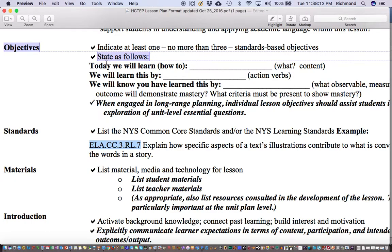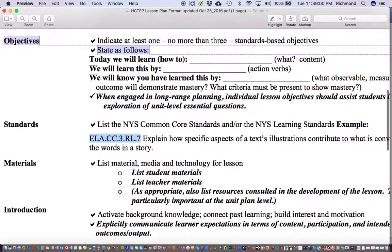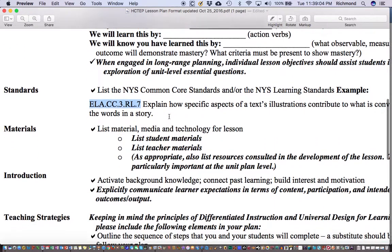Switching back over to the lesson plan, I notice that objectives say that we're going to include them in this form: Today we will learn how to do this or do that. What is the content that is going to be learned? We will learn this by, with action verbs like performing or creating or responding or connecting. You will know that you have learned this by, and typically in music class that would be through performance or through observation of students as they execute the teacher's instructions, as they do the movements that are indicated, as they sing or play the instruments as indicated.